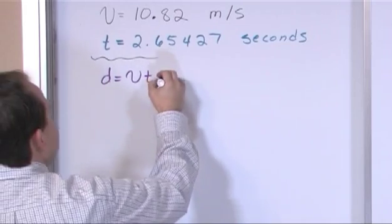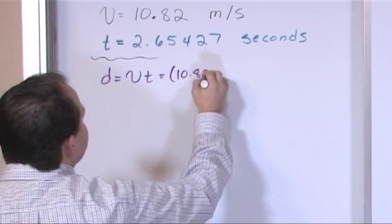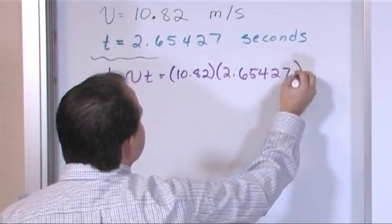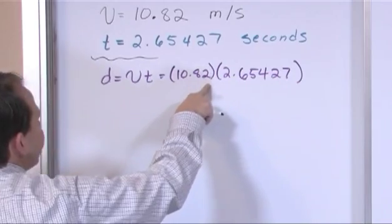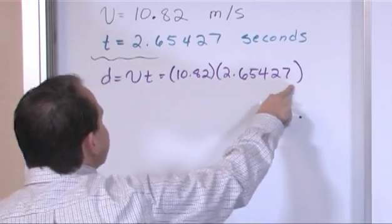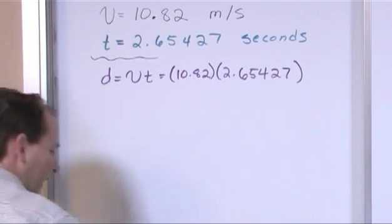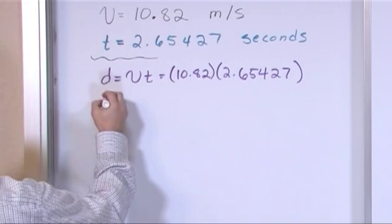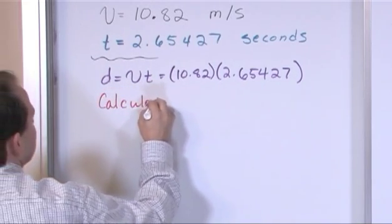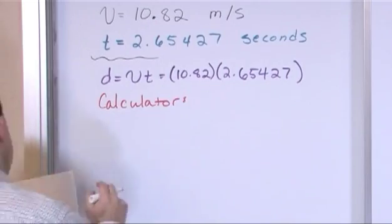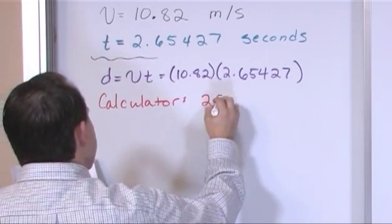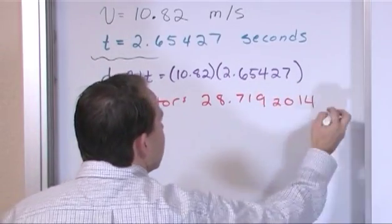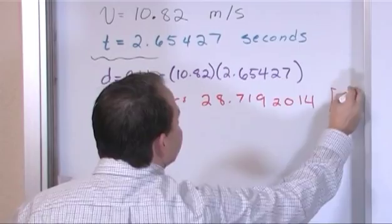So if I were going to do that, I would go in my calculator and put 10.82 and I would multiply it by 2.65427, because this is the velocity, meters per second, this is the time in seconds. I multiply it. Now when I do this, what do I get? In the calculator, the calculator will give me the following thing: the calculator will give me 28.7192014 meters.